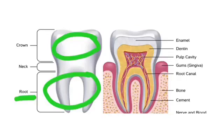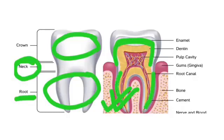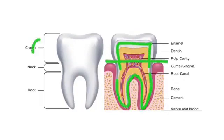The middle portion of the crown and root portion is the neck portion. If we see the cross section of tooth, the crown portion is covered with enamel and the root portion is covered with cementum. The enamel of the crown and the cementum of the root join at the cemento-enamel junction, in short CEJ.